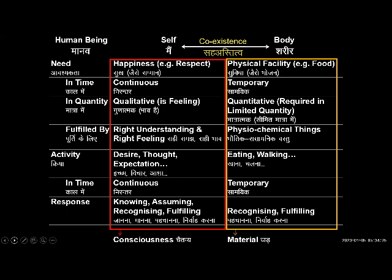So when we say that the need of the self is for happiness and it has to do with feeling, you can see it directly within yourself. When you have the right feeling, you are calm, you are comfortable, you are happy. And the moment you have a feeling that is not naturally acceptable, you are disturbed, you are in contradiction, you are unhappy. So when we directly observe this, we can see that the need of the self for happiness is fulfilled by the right feeling — the feeling that is naturally acceptable to us. And because this need in the self is a continuous need, I want to be happy in continuity all the time, so I need to have this right feeling all the time.